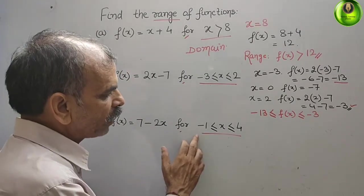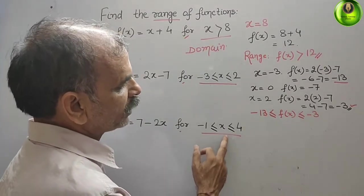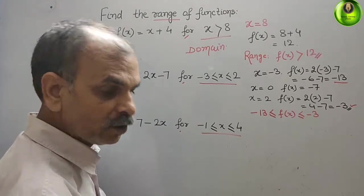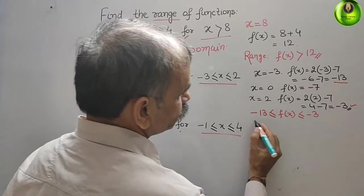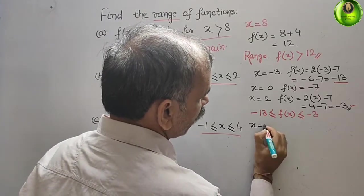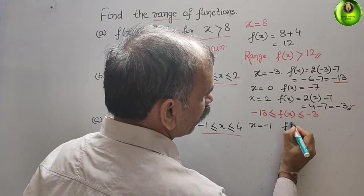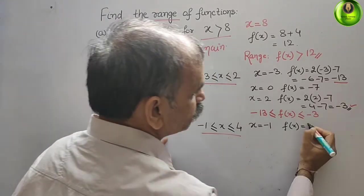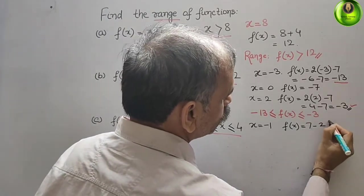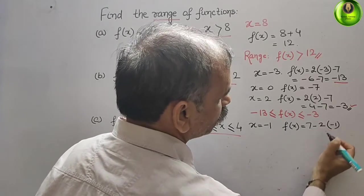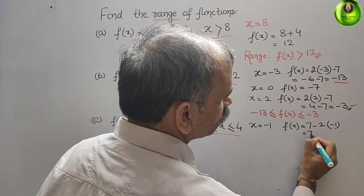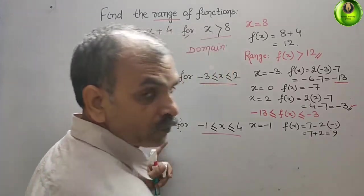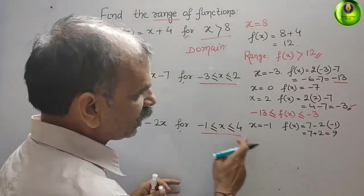Next, f(x) = 7 - 2x for -1 ≤ x ≤ 4. First we will take x = -1. So f(x) = 7 - 2(-1), which is 7 + 2, that is equal to 9.